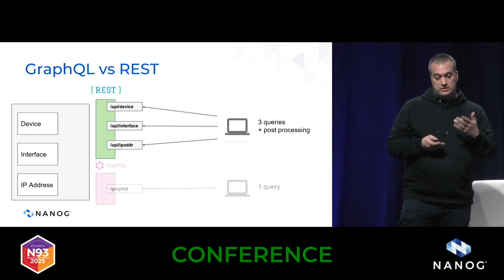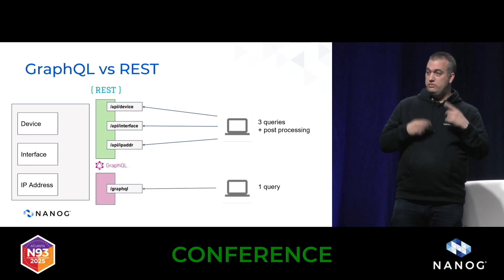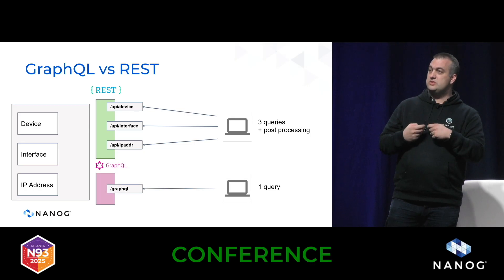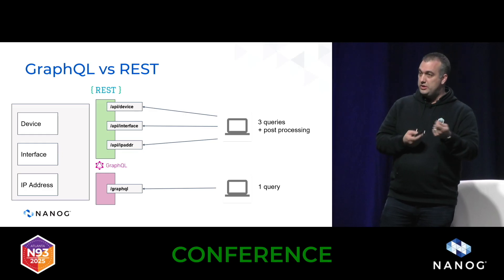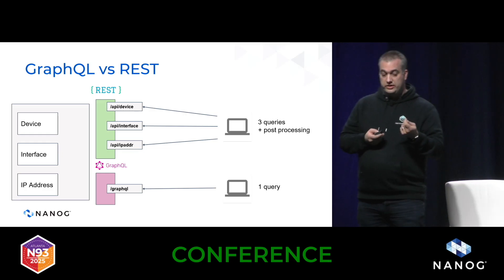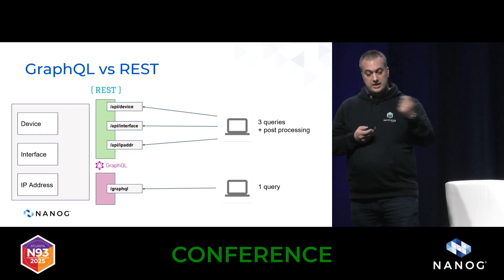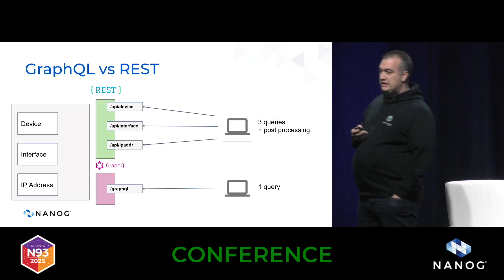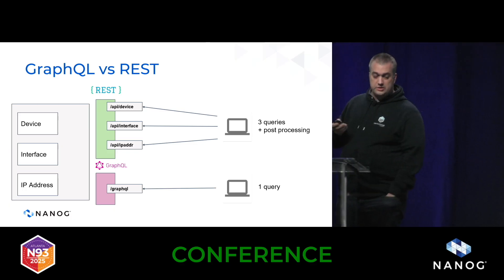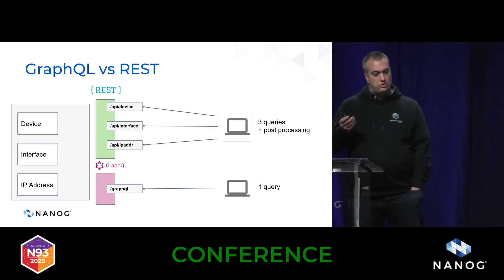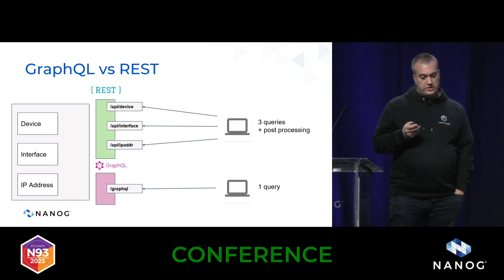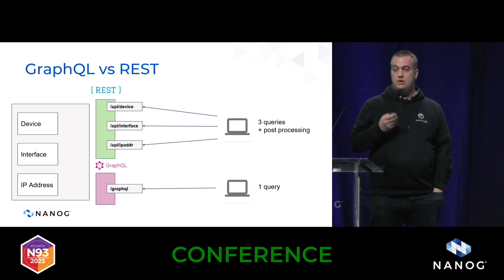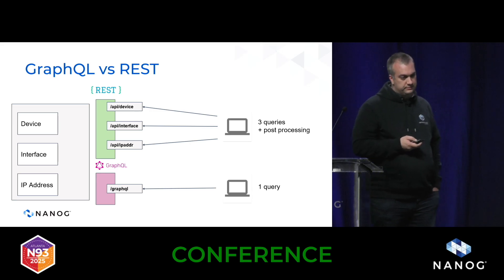With GraphQL the way it works is you have one interface, one query, and the client is able to express exactly what it wants to query. It gets back only the information it asked for. As we talk about the use cases, you'll see that this has huge implications for how we actually consume data.